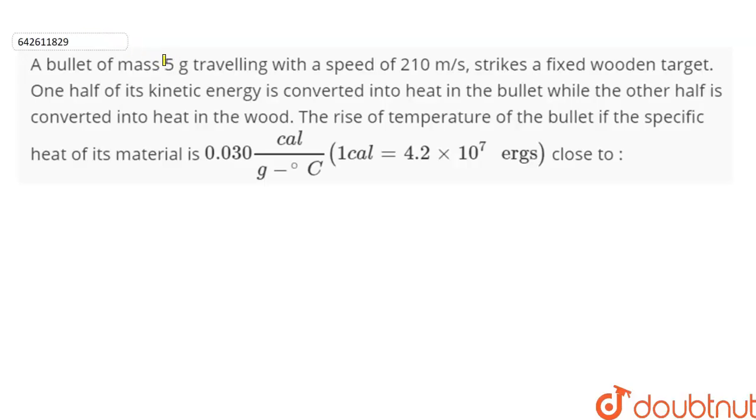A bullet of mass 5 grams traveling with a speed of 210 meters per second strikes a fixed wooden target. One half of its kinetic energy is converted into heat in the bullet while the other half is converted into heat in the wood.